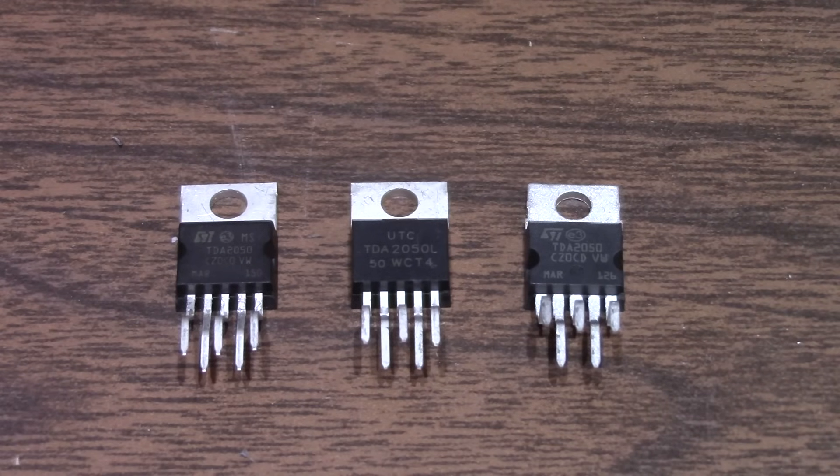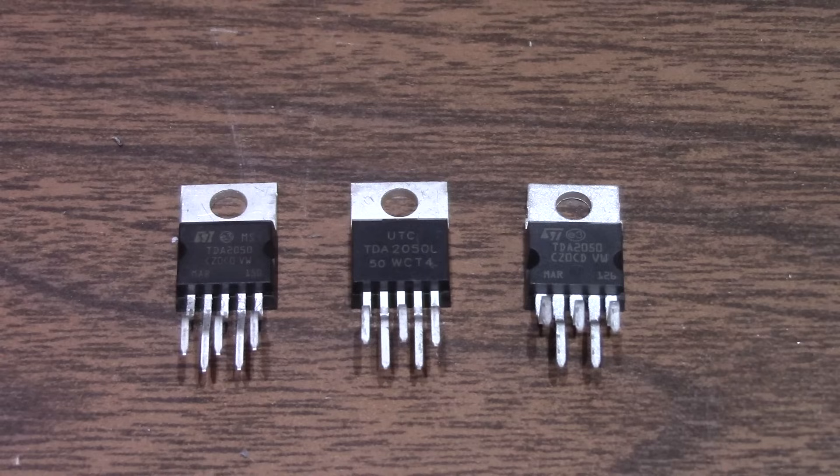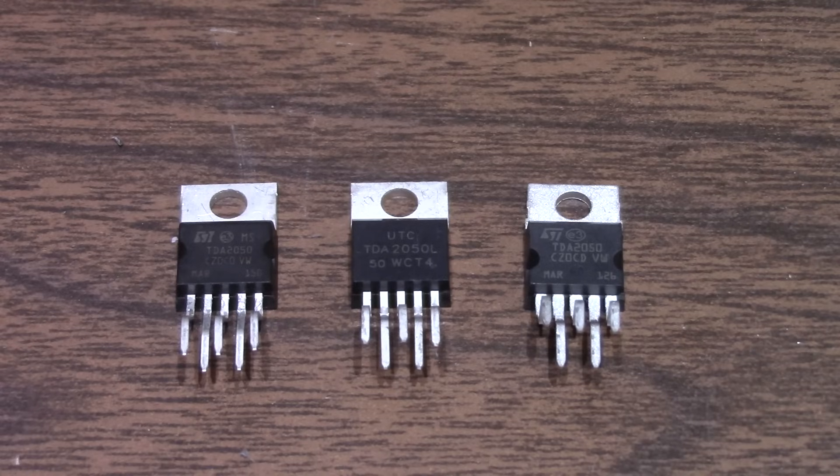I purchased chips in the past off of eBay probably like three times and they were always counterfeits. And I shot a video many years ago demonstrating the differences between an authentic TDA2050 and a counterfeit one. I didn't have the audio analyzer at the time but it was pretty easy to show that the counterfeit was really underperforming. I'll put a link in the description to that video if you want to have a look at it.